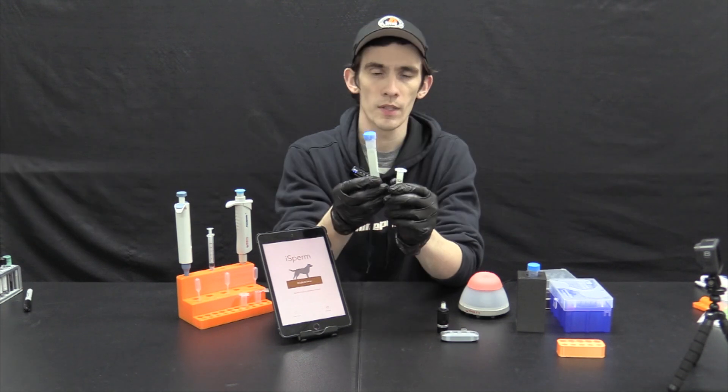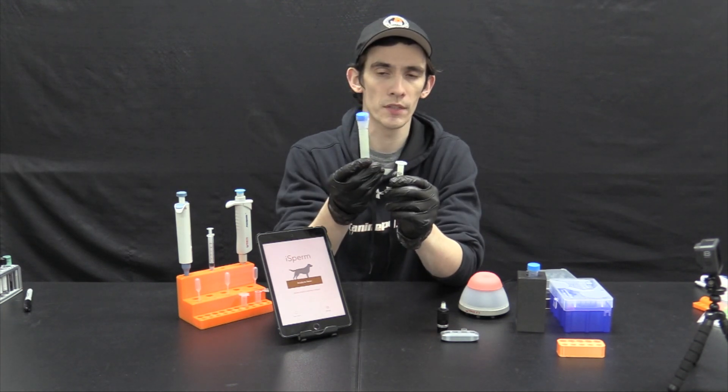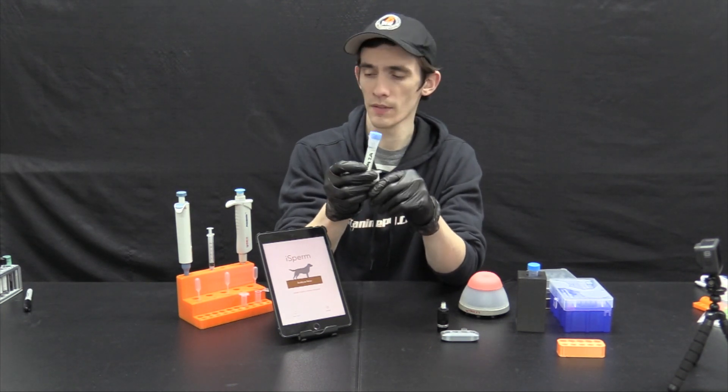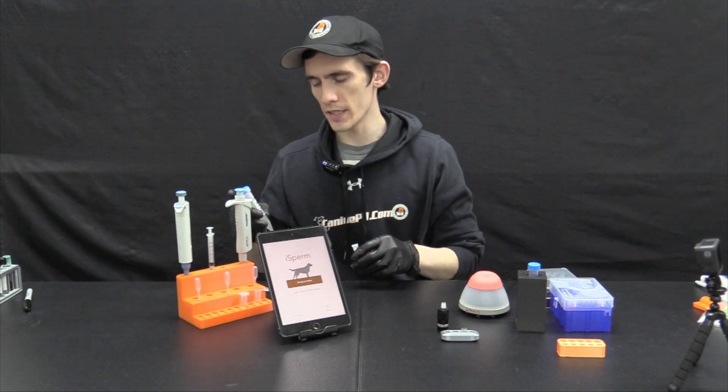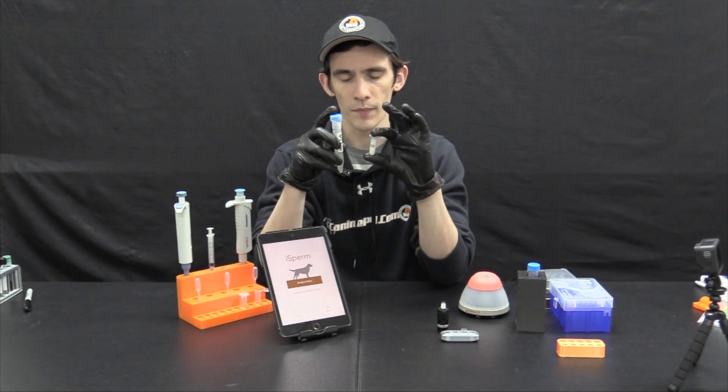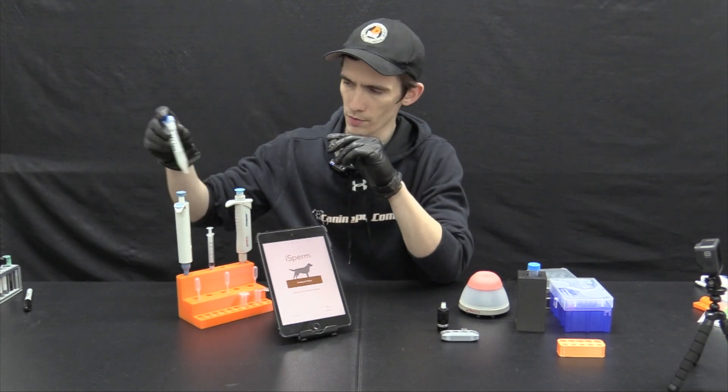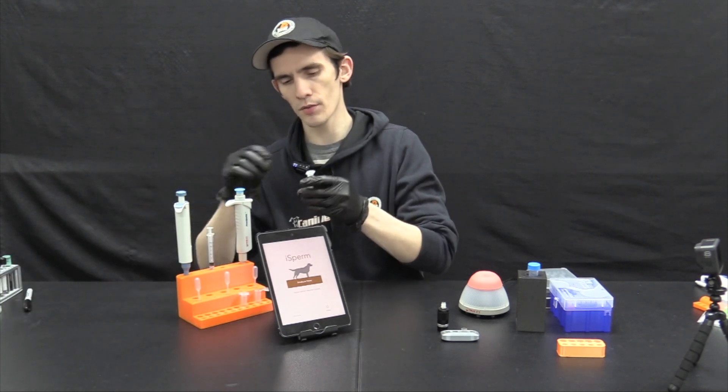So here we have this 2 milliliter sample of sperm. You may have a larger 15 milliliter tube, but more often than not. So the first step we need is to get a reading on this raw count. So for that I'm going to use the 2 milliliter tube.